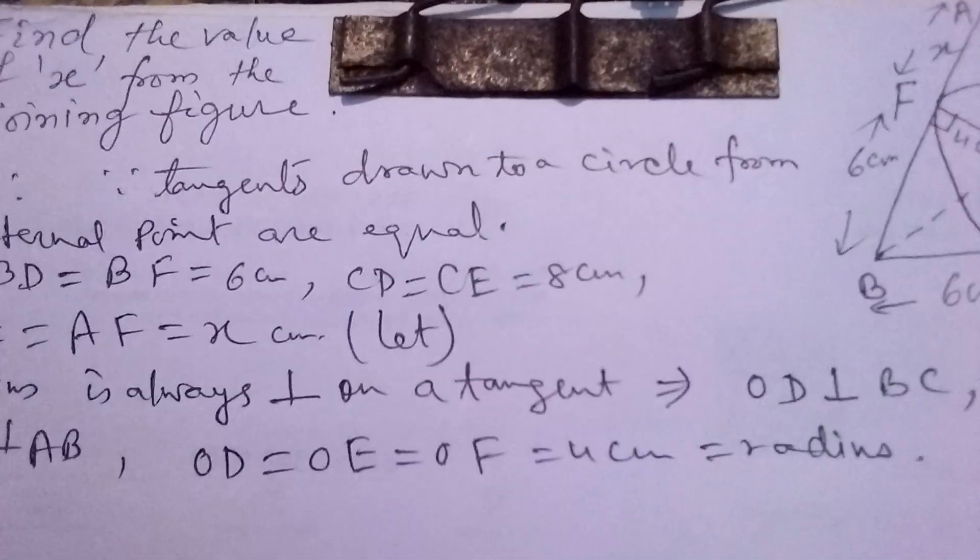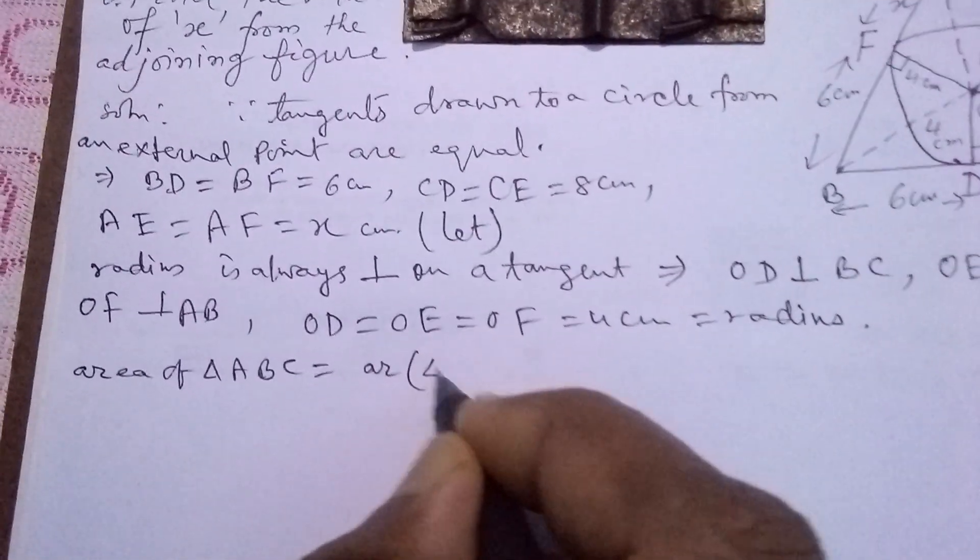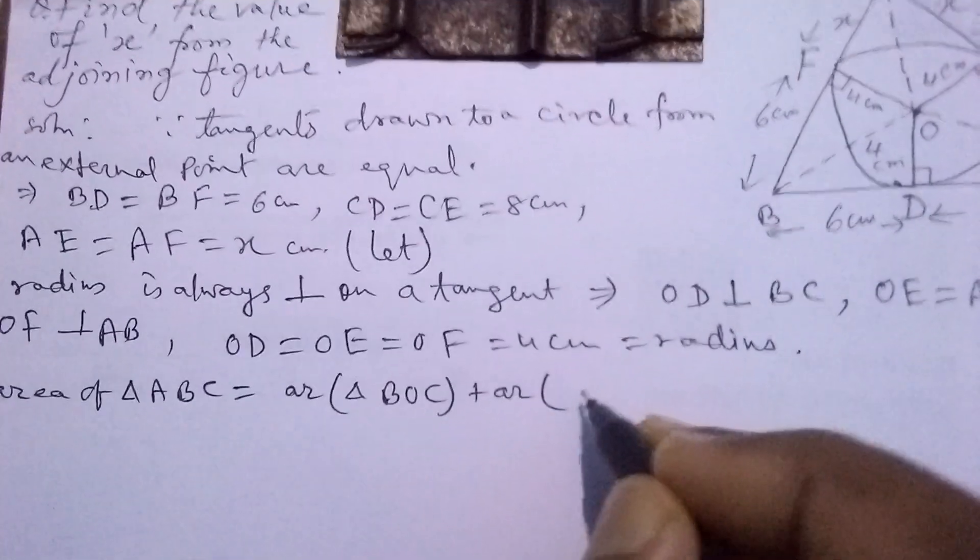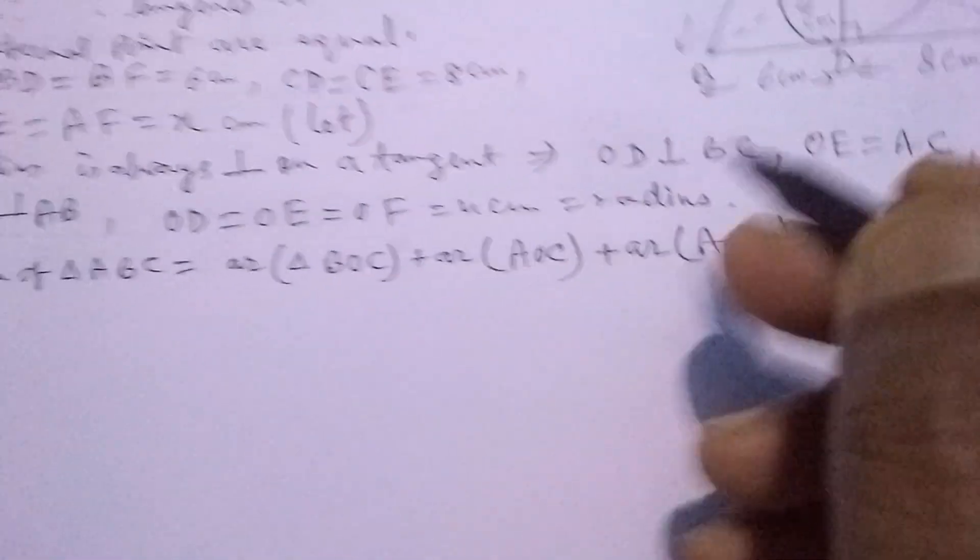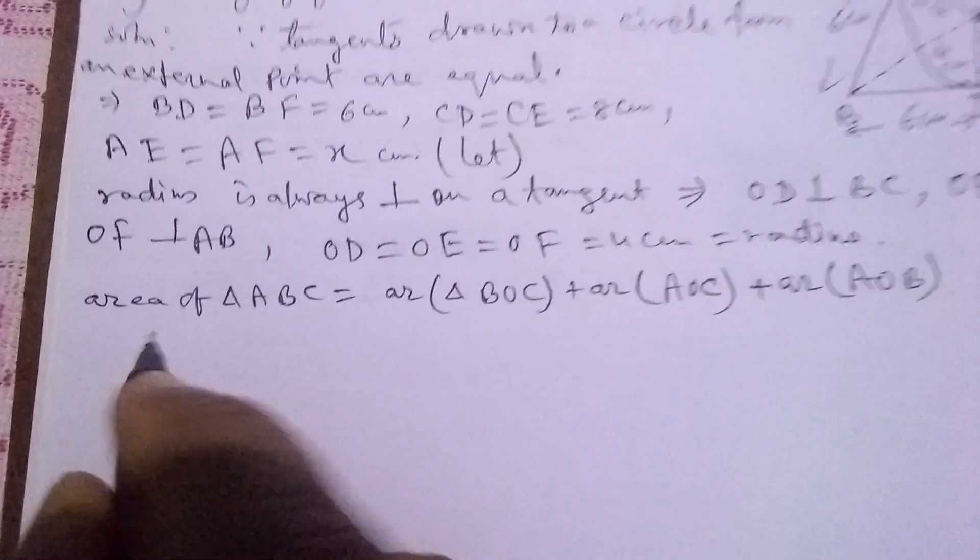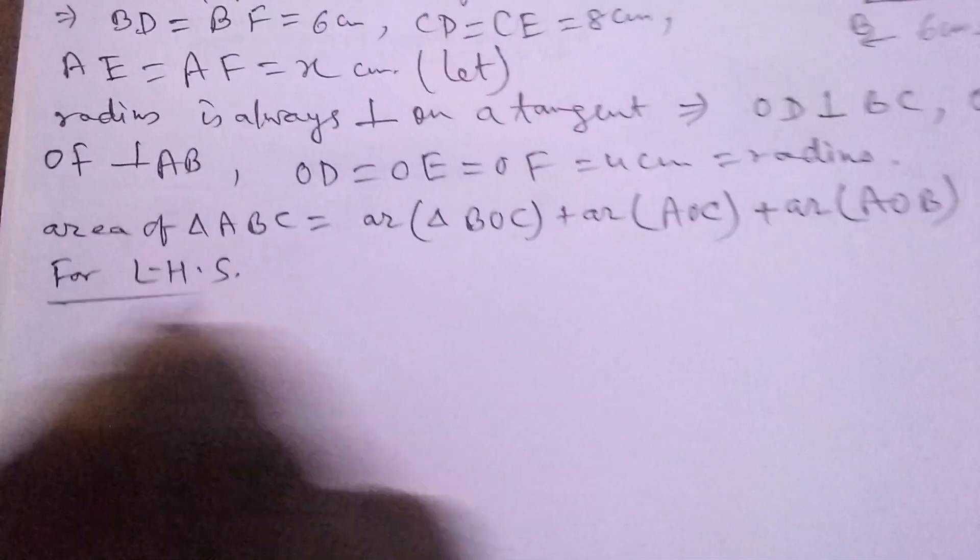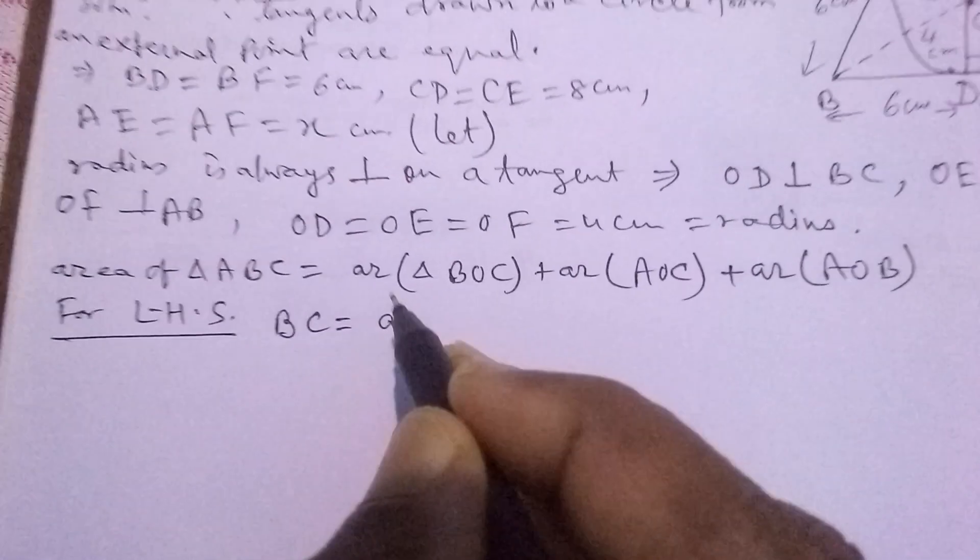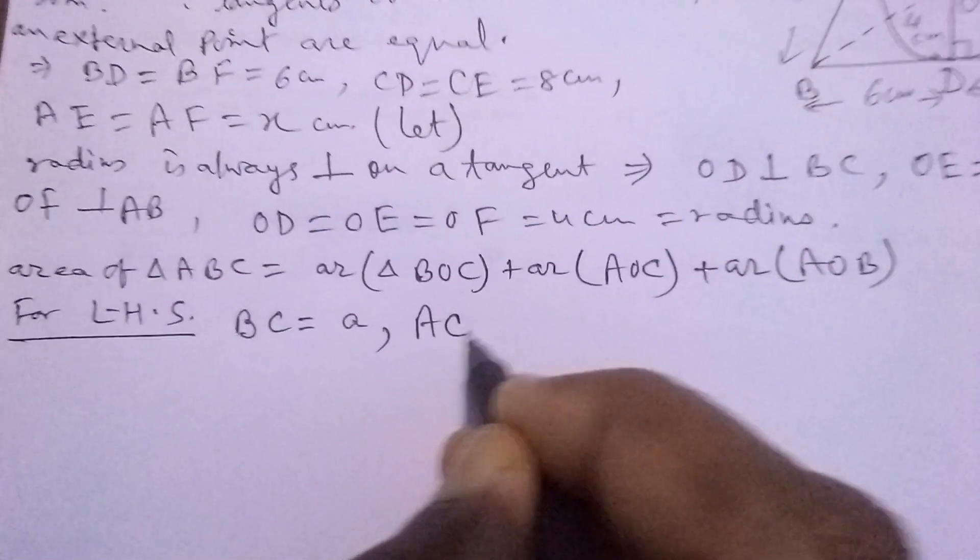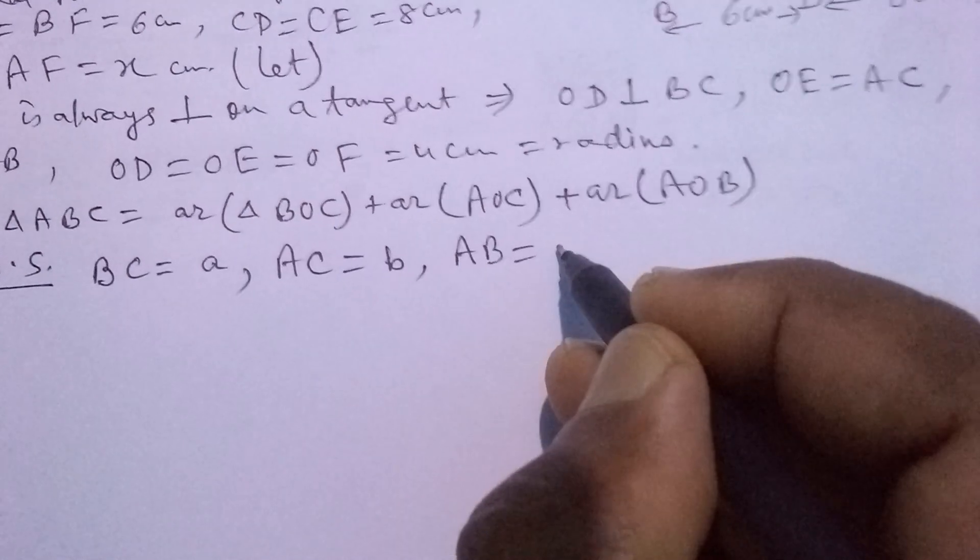Now, area of triangle ABC equals area of triangle BOC plus area of triangle AOC plus area of triangle AOB. This is LHS, so for LHS we are proceeding. BC equals small a, AC is opposite to angle B so it is small b, and AB is opposite to angle C so it is small c.